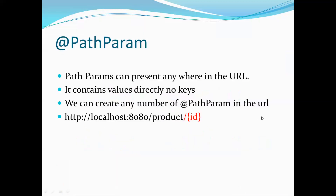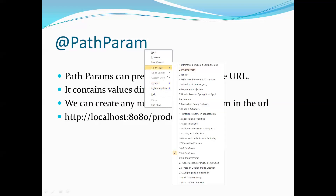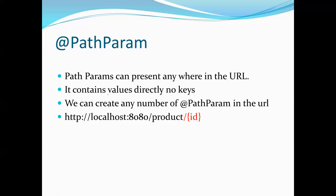So what is path param? Path param can be present anywhere in the URL — the URL in the sense the endpoint. You can use path params anywhere inside the endpoint. Path params contain values — there is no concept of keys in path param. For example: localhost, your port number, slash — this is a URL of your product controller or employee controller. Path param is mostly used to retrieve details based on primary keys, where the ID represents your primary key. You can replace it with values like 1, 12, or 55 — it's directly values with no key concept.